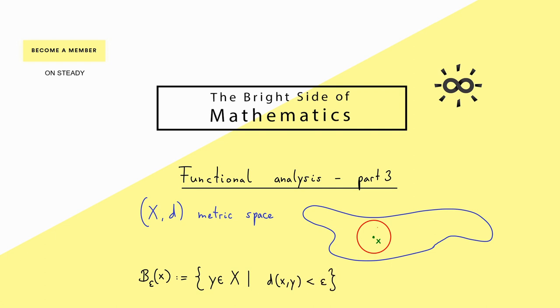However this means that in the picture it's not the red line it's everything inside. Now please note that for a given positive radius epsilon and a fixed point x from the metric space this epsilon ball is never empty because at least the point x lies in this set.